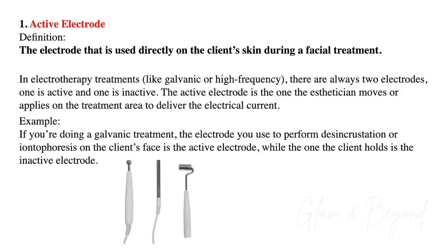For example, if you're doing a galvanic treatment, the electrode you use to perform desincrustation or iontophoresis on the client's face is the active electrode, while the one the client holds is the inactive electrode.